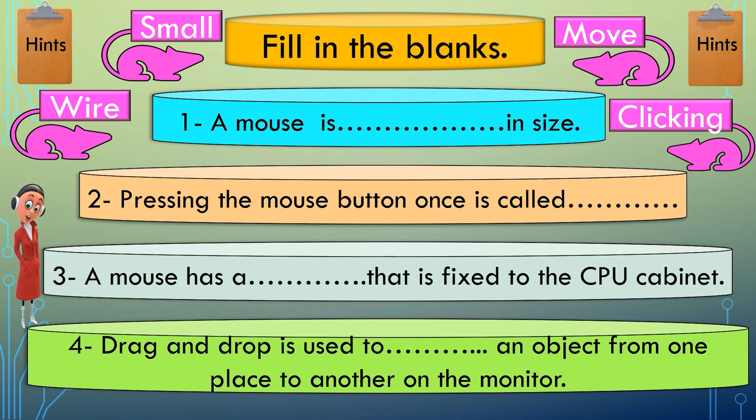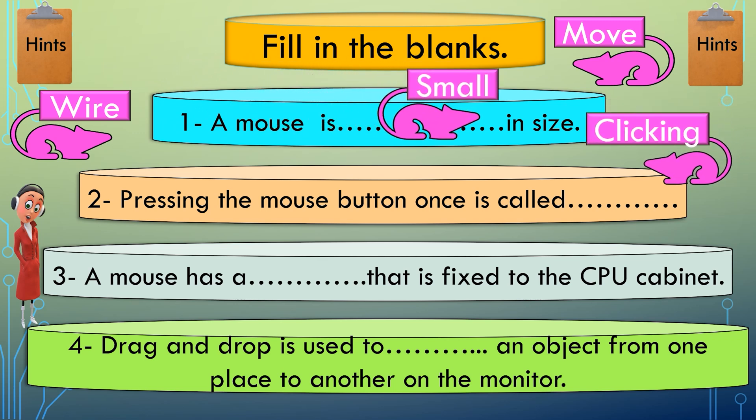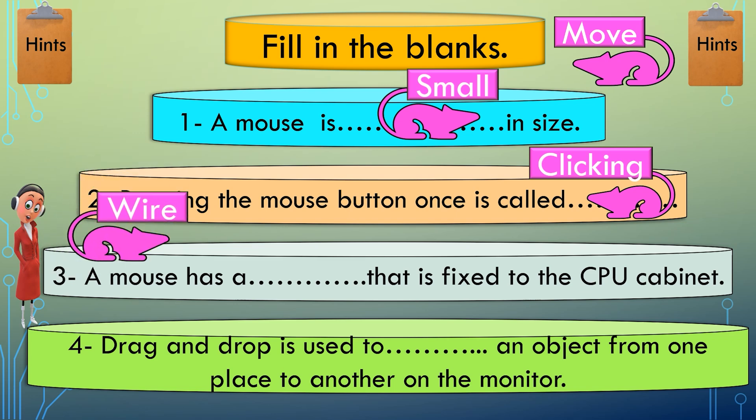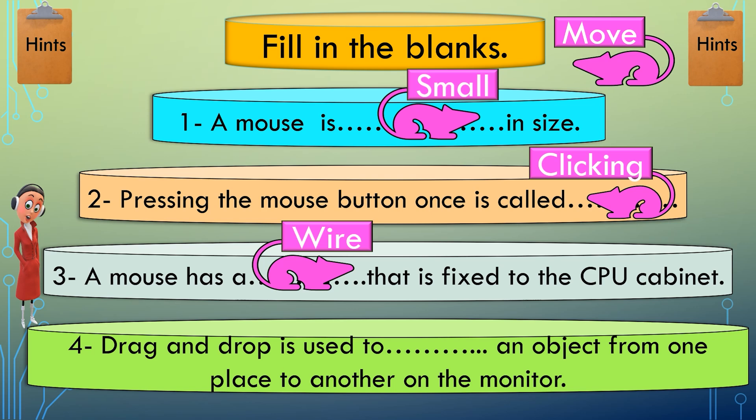Now is the time for correct answers. Number 1: A mouse is small in size. Number 2: Pressing the mouse button once is called clicking. Number 3: A mouse has a wire that is fixed to the CPU cabinet. Number 4: Drag and drop is used to move an object from one place to another on the monitor.